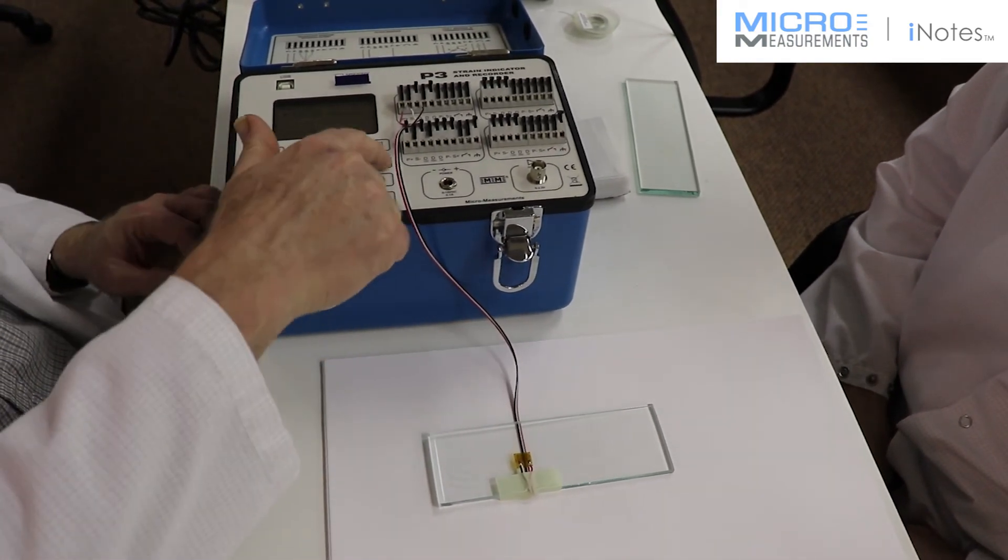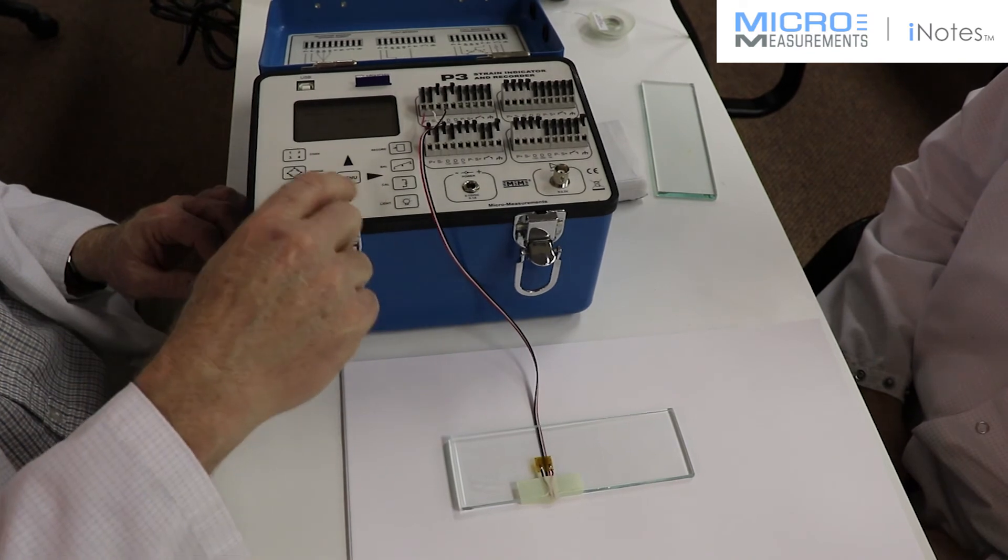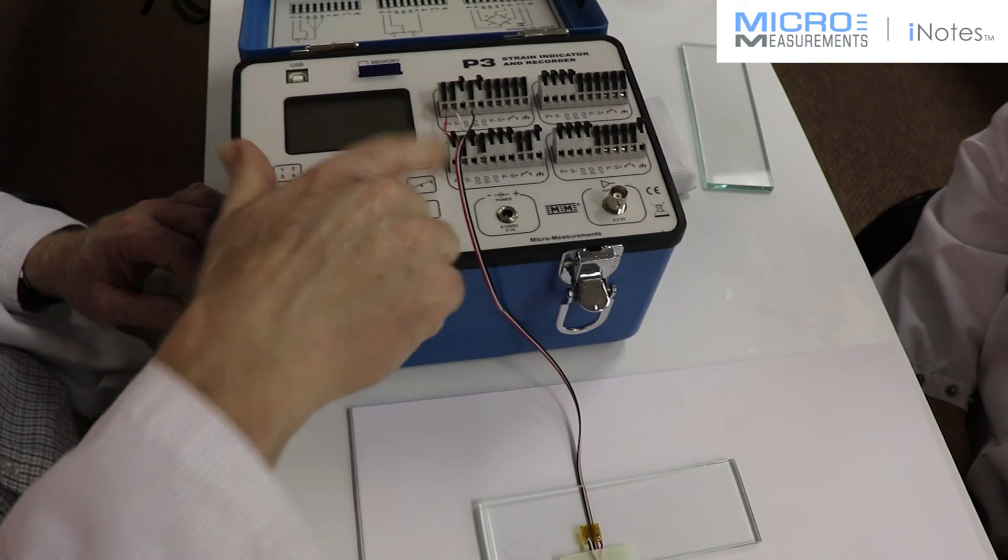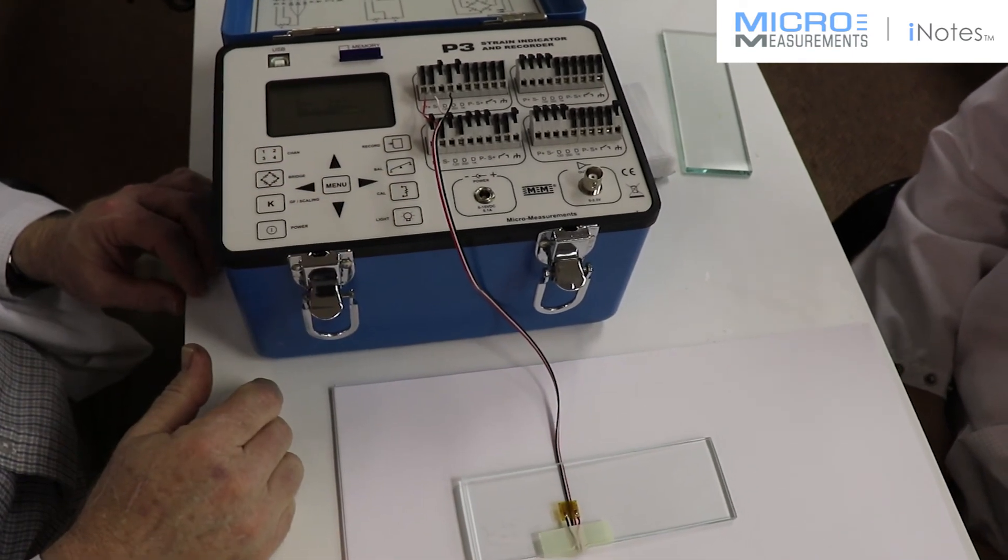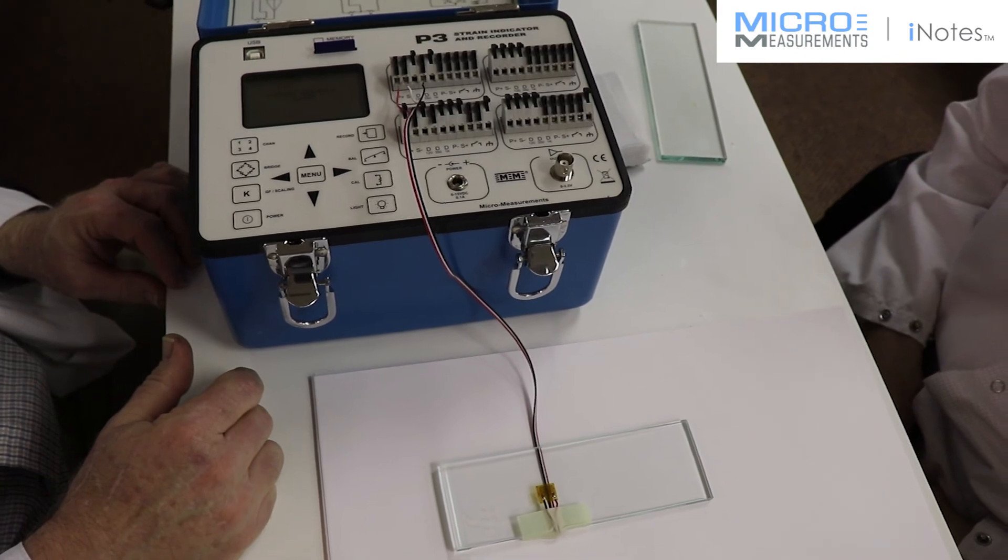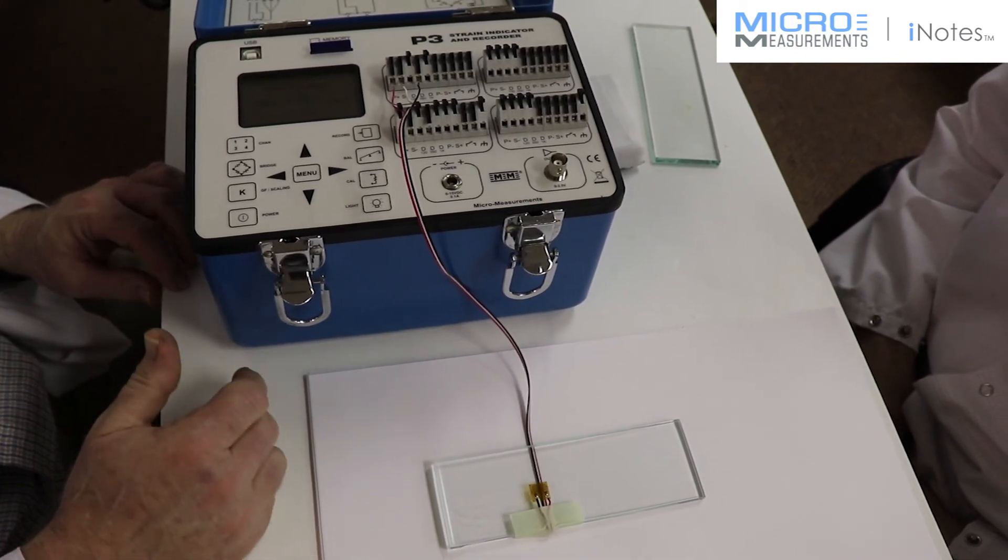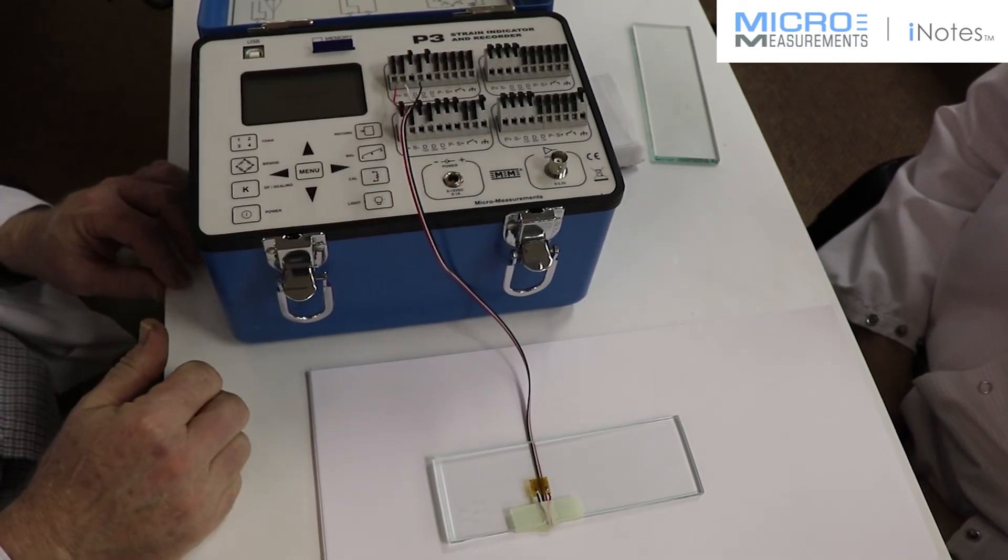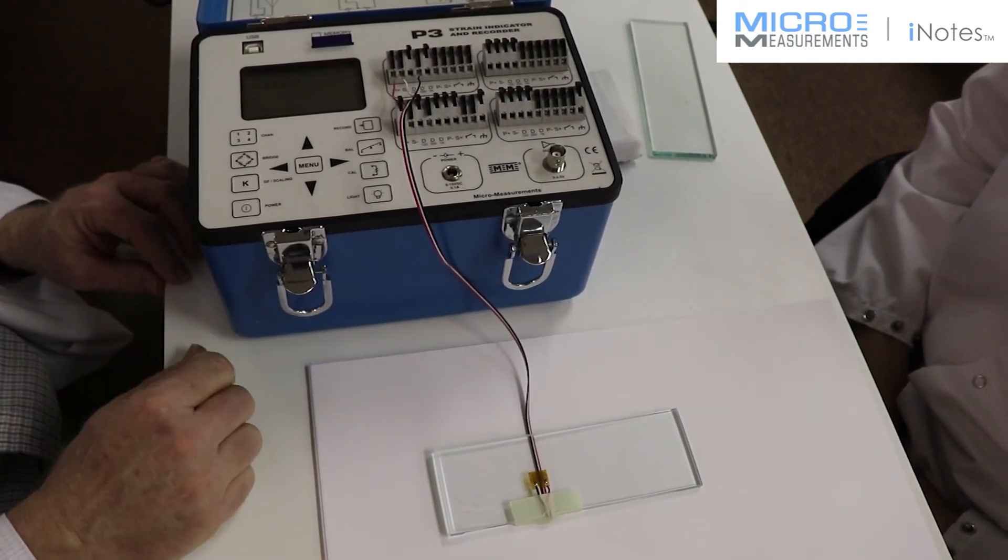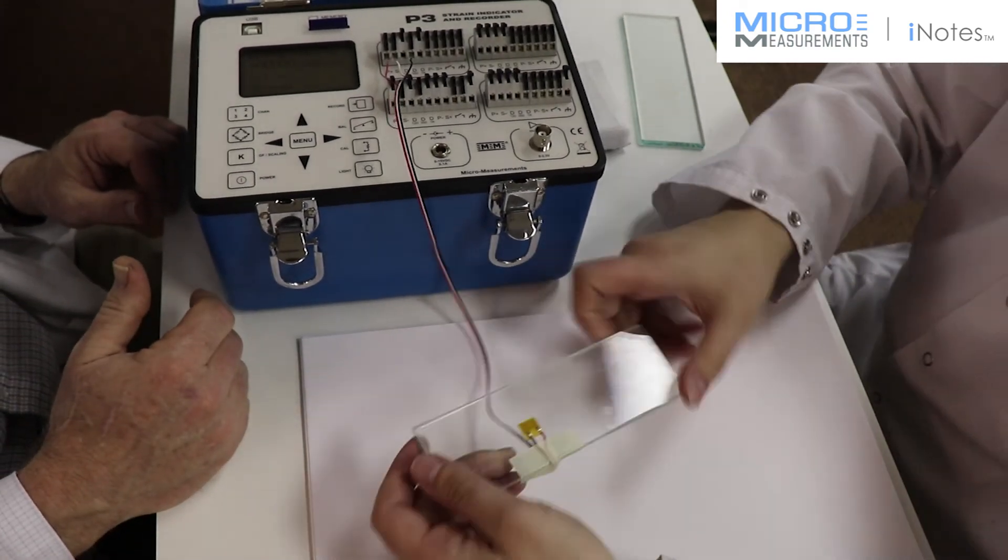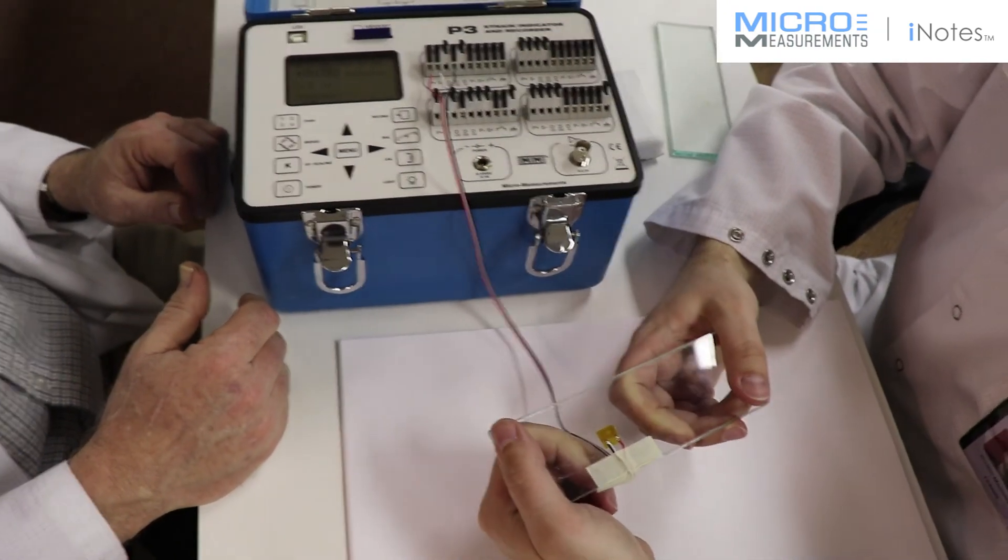The next step is I'm going to balance out that offset. Since there's nothing connected to 2, 3, and 4, I don't get an offset there. I'm going to save the setup so my zero is saved. And now, Colin, if you want to, go ahead and bend the glass beam and see what kind of strain level we can get on here.